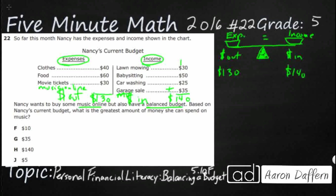Like we said, it's okay to have your income be a little bit more than your expenses. Her budget is a little bit imbalanced right now, and that's fine, because her expenses are not as big as her income. Now she wants to maintain a balanced budget and she's wanting to spend some money on online music.